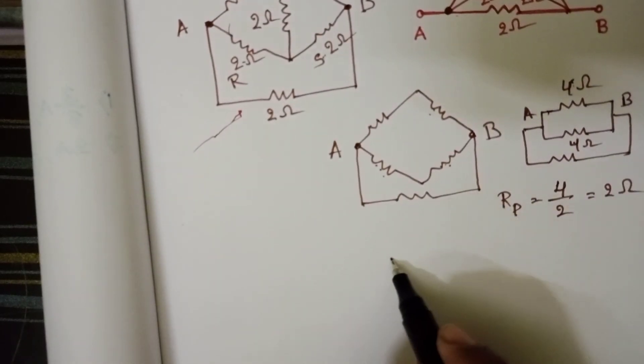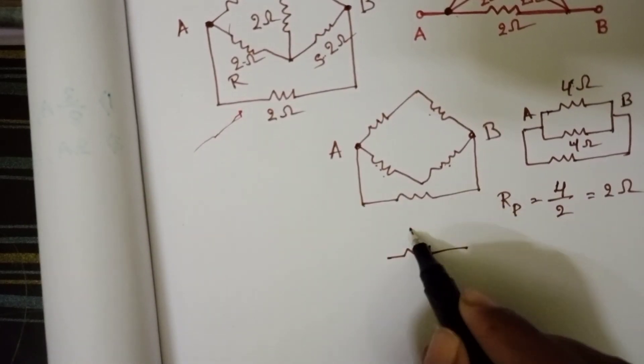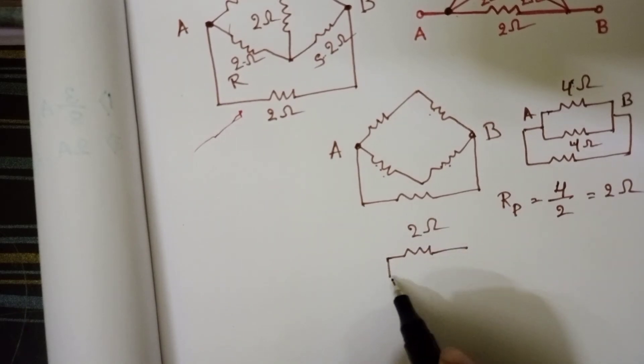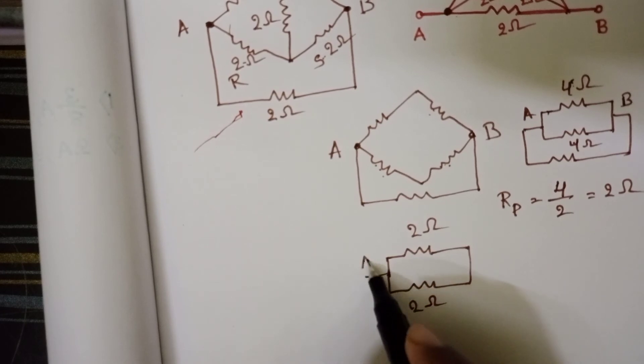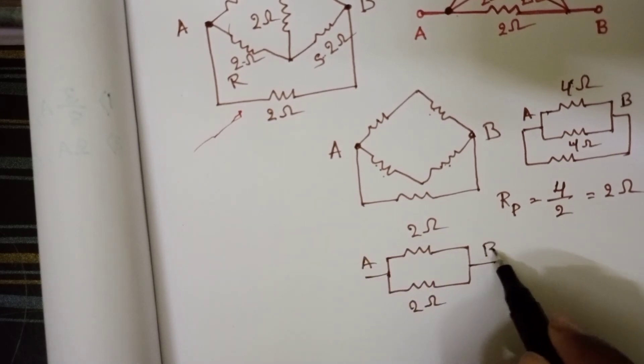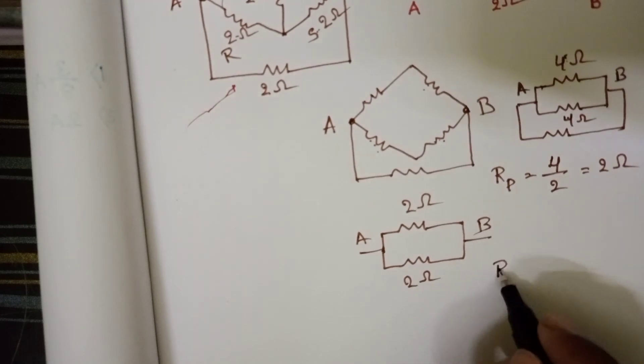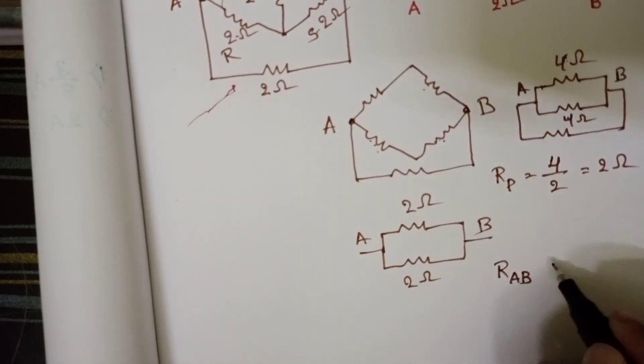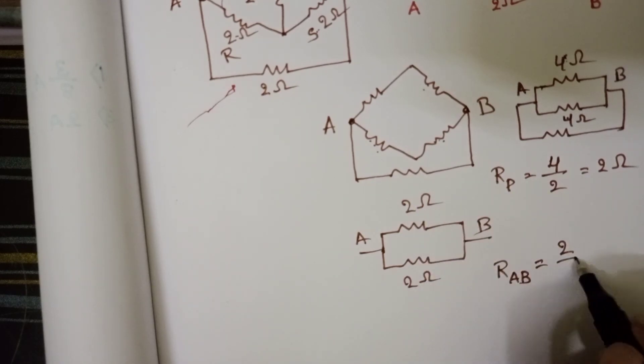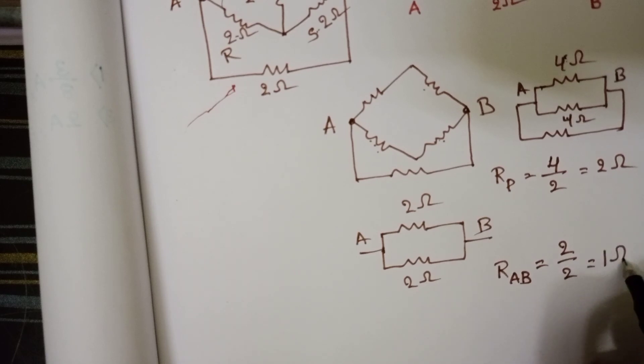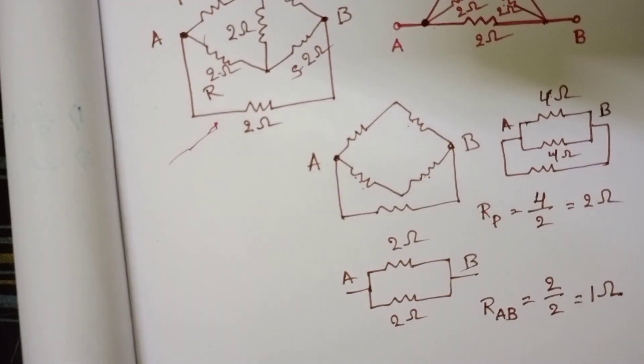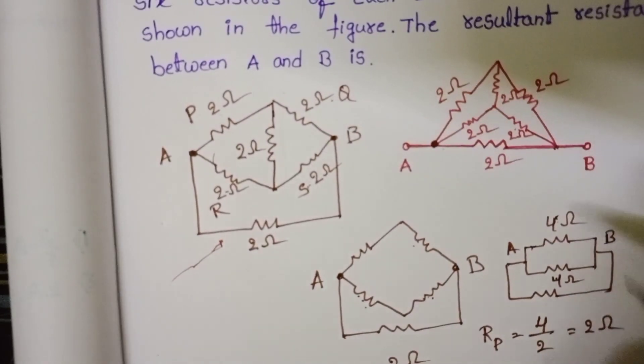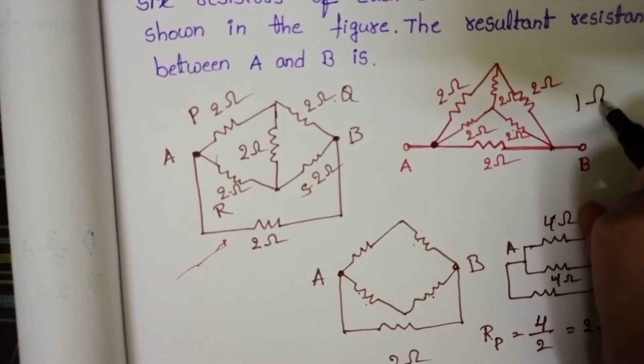Now the final circuit diagram: 2 ohm resistor, 2 ohm resistor, and 2 ohm resistor. These 2 are connected parallel to each other. So the equivalent resistance RAB equals, each resistor resistance is same only, so R by N formula, 2 by 2. That equals 1 ohm. So the equivalent resistance of the given circuit diagram is 1 ohm.